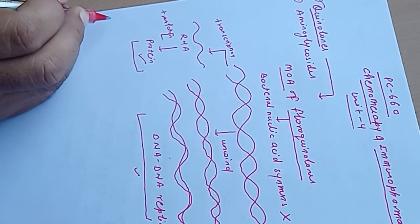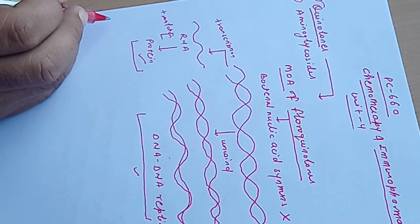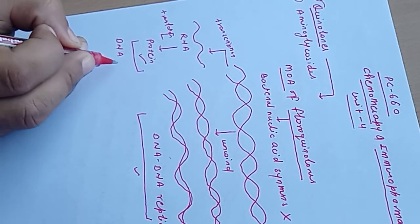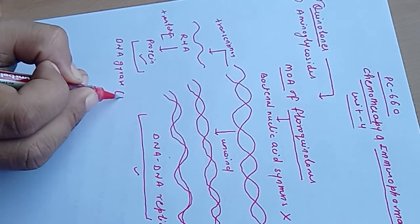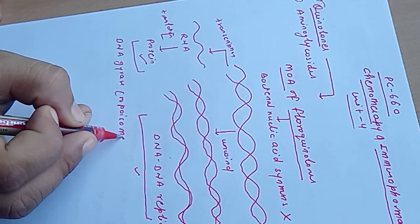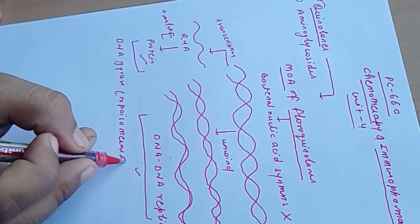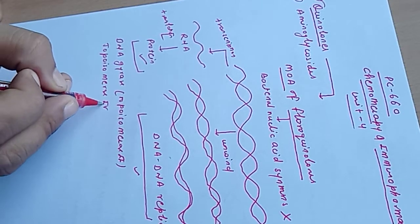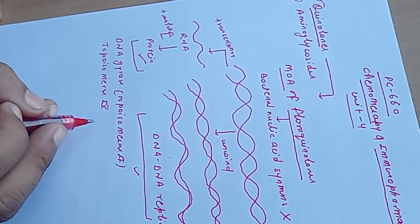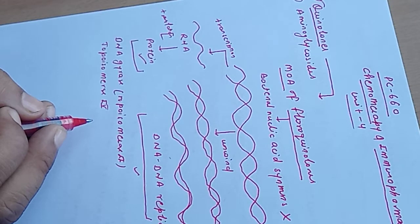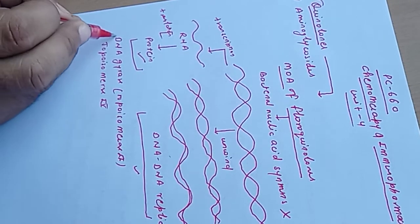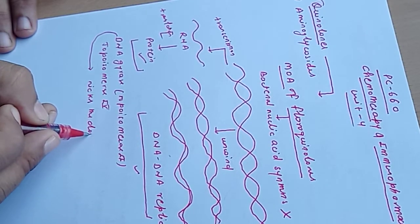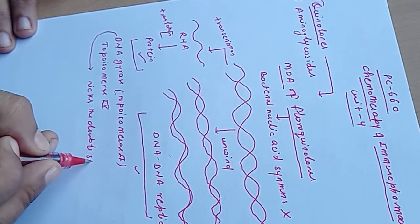For the unwinding of DNA, there are enzymes that help in this process. These enzymes are DNA gyrase — that is topoisomerase 2 — and topoisomerase 4. These are the enzymes which help in the unwinding of DNA. DNA gyrase particularly nicks the double-stranded DNA.